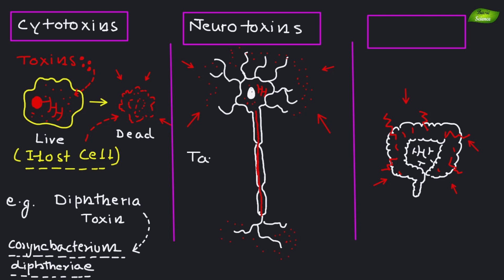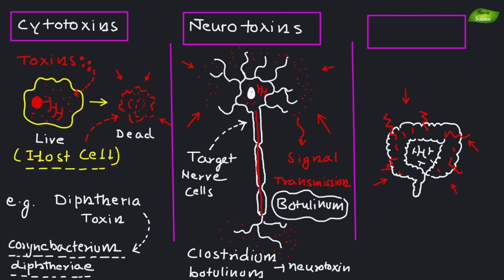The next category is neurotoxins. These specifically target nerve cells, interfering with nerve signal transmission. The botulinum toxin produced by Clostridium botulinum is a well-known neurotoxin that causes botulism.